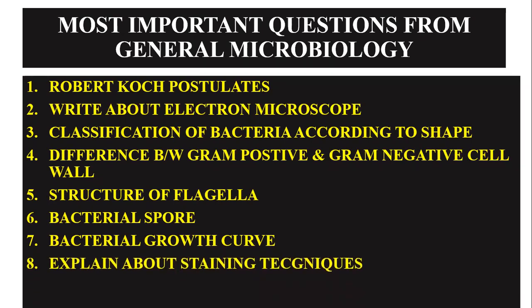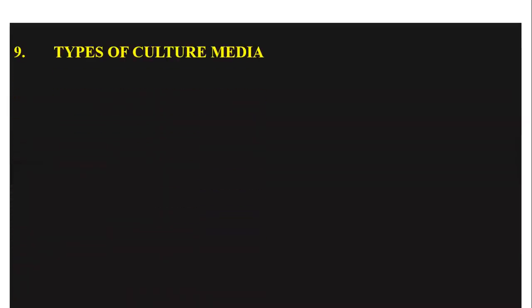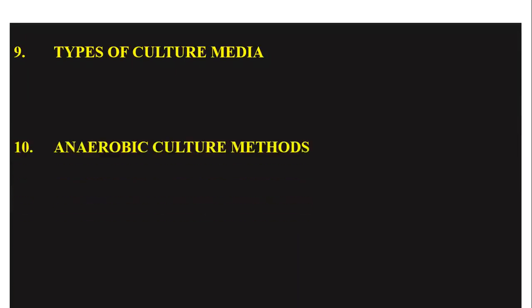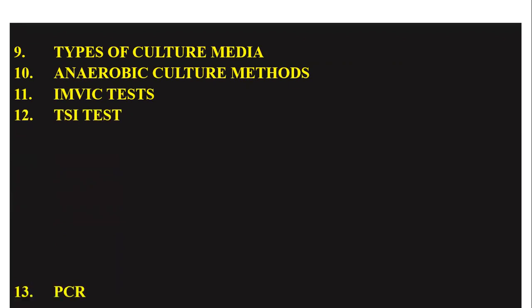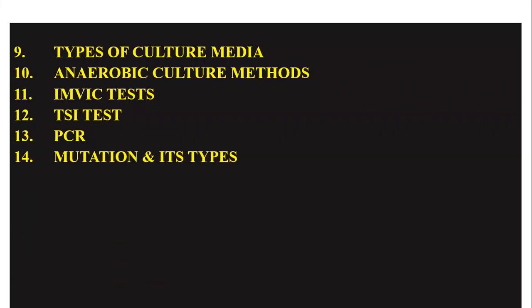Next, explain staining techniques — gram staining and AFB staining. Then types of culture media, and anaerobic culture methods. Next, the IMViC test — indole, methyl red, Voges-Proskauer, and citrate tests. Also TSI (triple sugar iron) test as short notes, and PCR — polymerase chain reaction — its method and procedure.